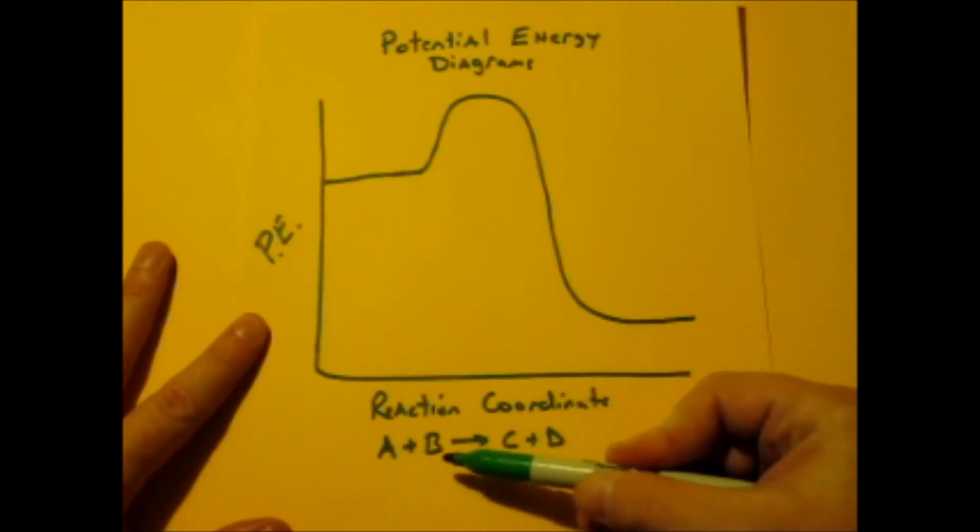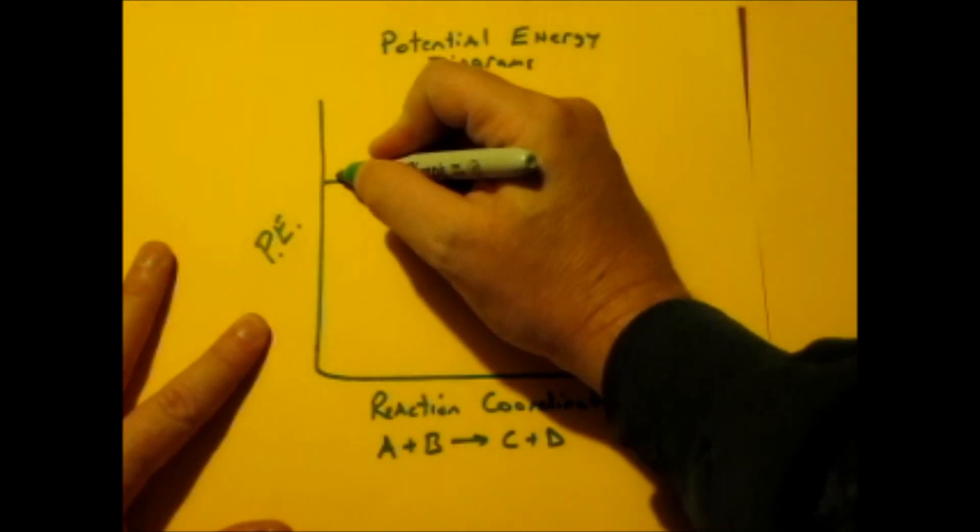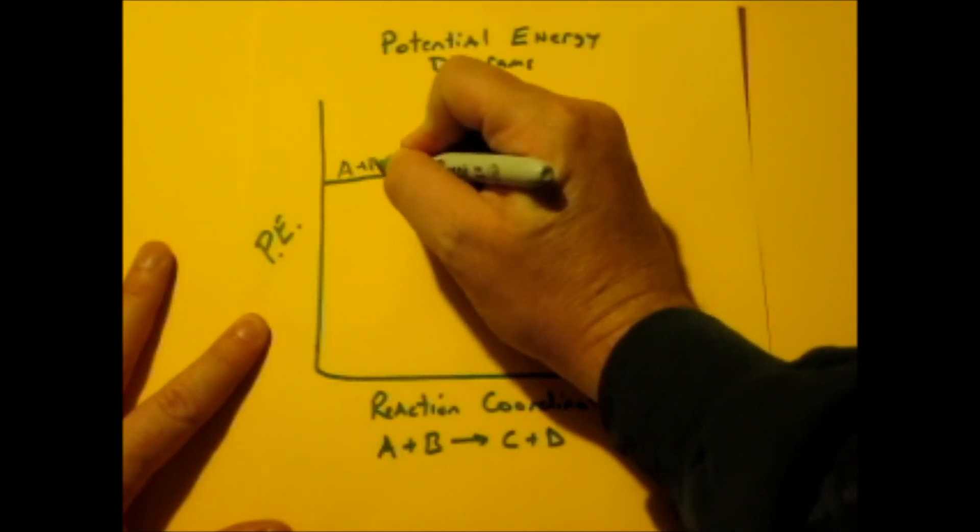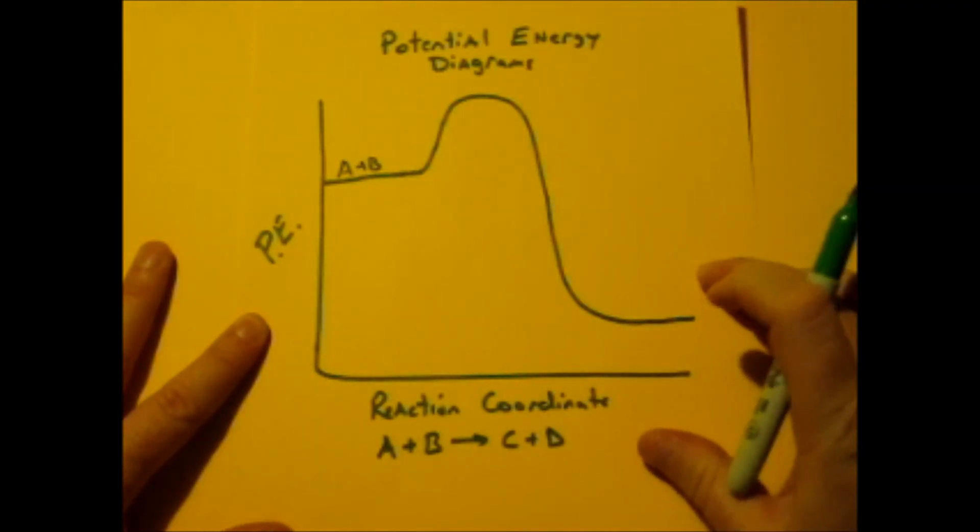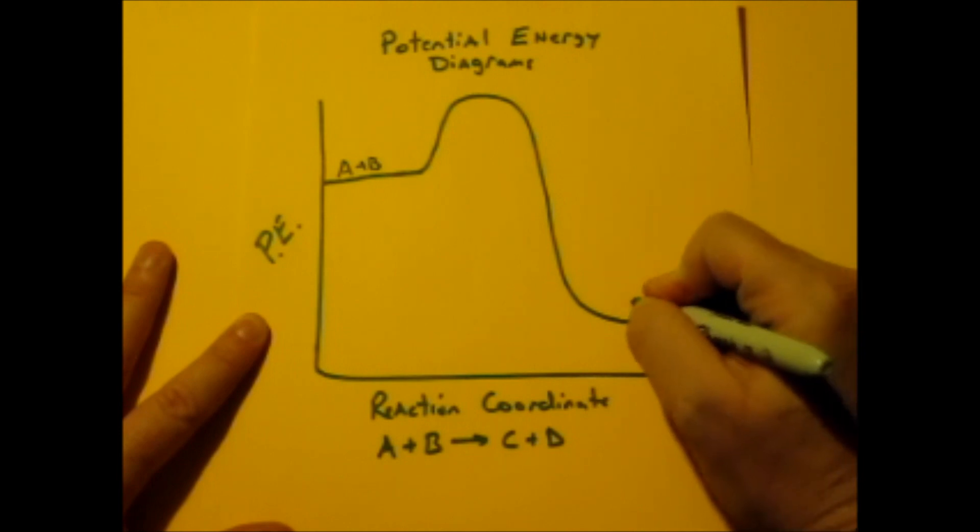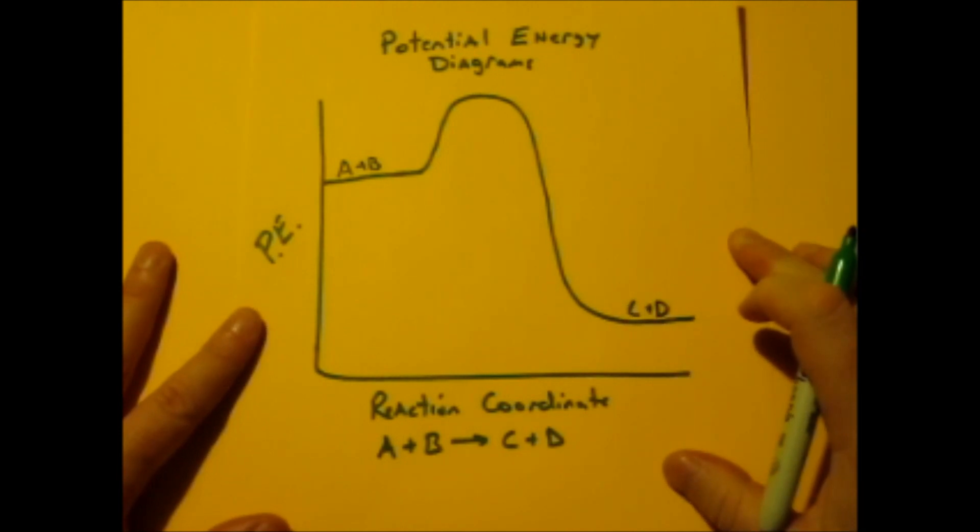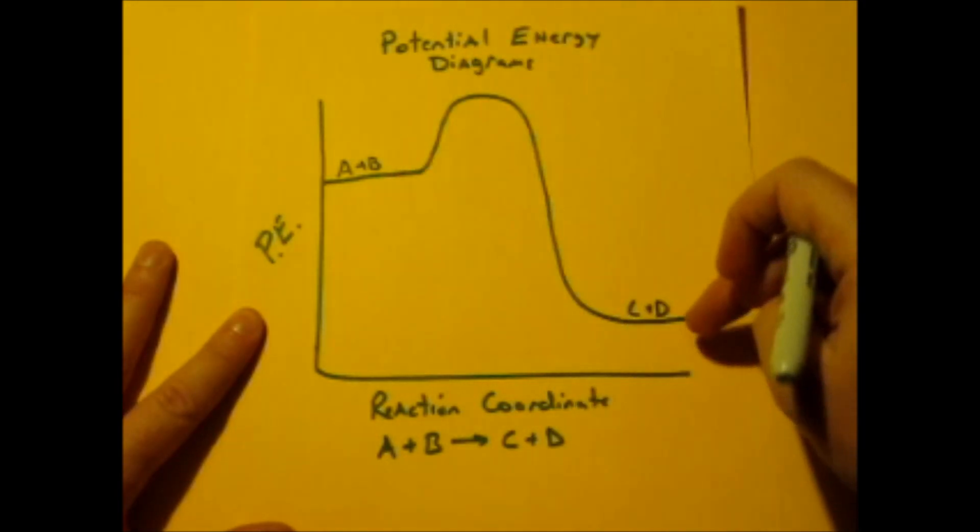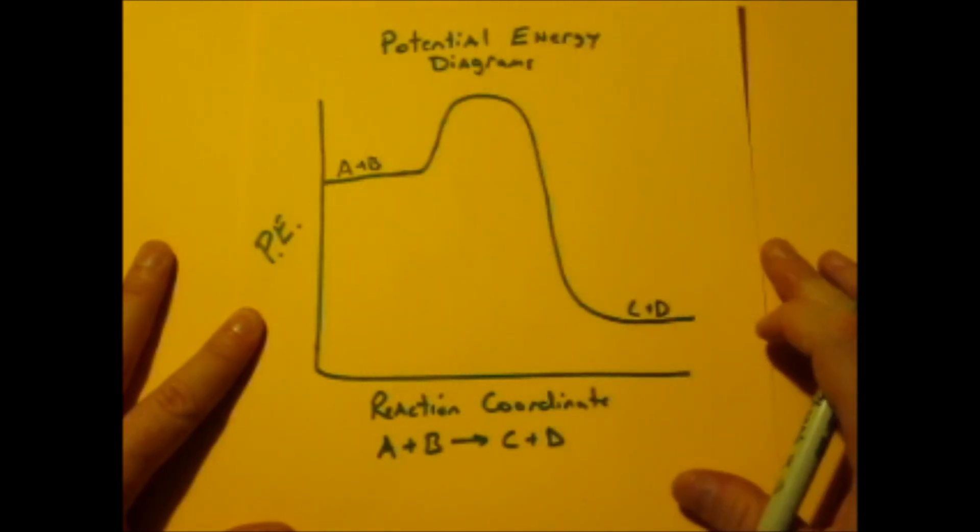What you start with, here's our reactants AB. They actually would be situated somewhere over here where we start. At the end of the reaction, you have CD, and at the end of the reaction, it's down here. What happens is AB turns into CD, and they go through this potential energy change.